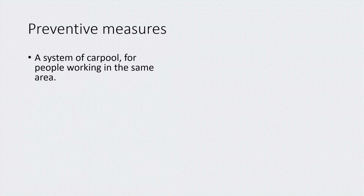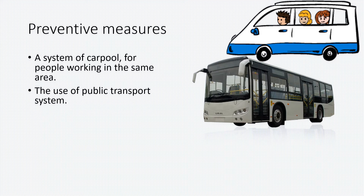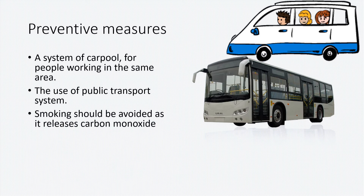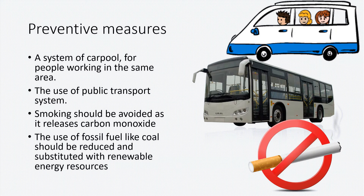How can we prevent air pollution? Carpooling — when many people travel together — reduces air pollution. We should use public transport like buses, trams, or railways. Smoking should be avoided because it releases carbon monoxide, which is very bad for health, particularly for children. Fossil fuels should be used less and renewable resources should be used more.